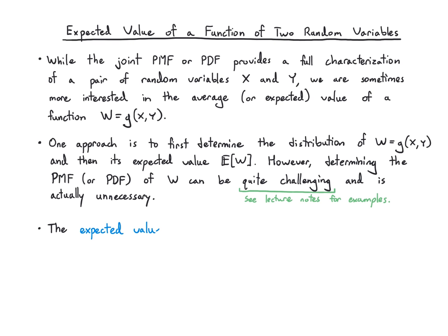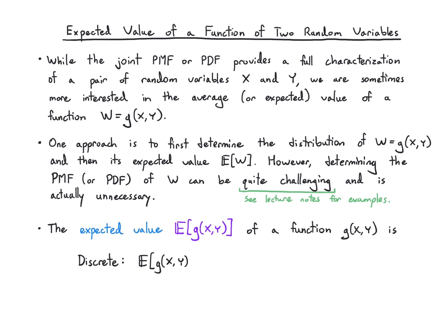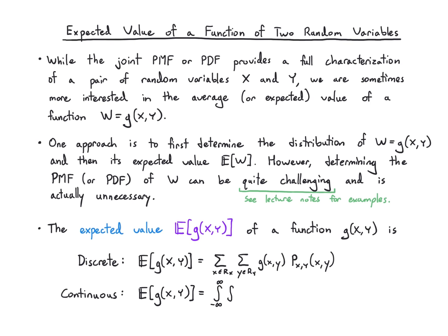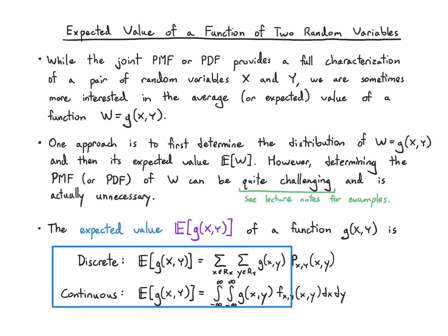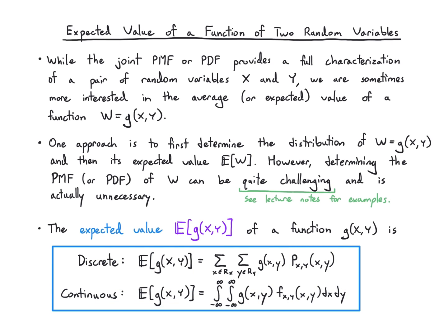What we're going to do instead is say the expected value of a function g of x and y is defined as: in the discrete case, a sum over the values of that function times the joint PMF; and in the continuous case, the expected value is the double integral of that function times the joint PDF, integrated over x and y. That's the definition, and g can be whatever function we're interested in.